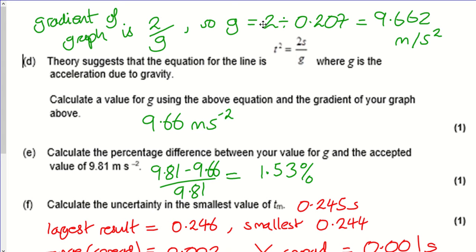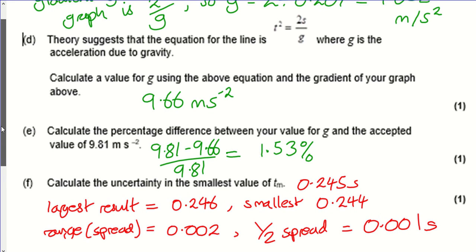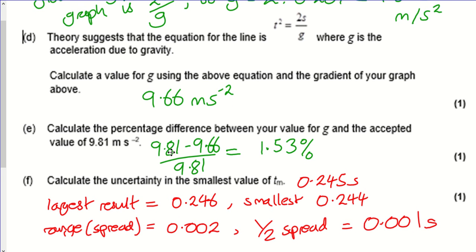Our gradient was 0.207, so g = 2 ÷ 0.207 = 9.662 m/s², which rounds to 9.66 m/s². The accepted value is 9.81 m/s², so the percentage difference is 1.53% — less than 2% out, which is pretty good.